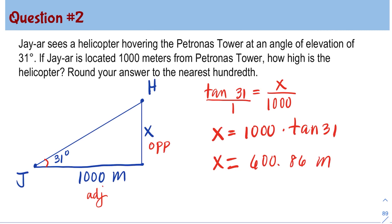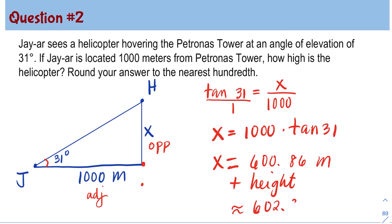To find the height of the helicopter, we also need to include the height of JR. My friend JR is really tall — he is 6 feet tall, so that is about 2 meters in height. So the height of the helicopter is about 602.86 meters, considering the height of JR which is about 2 meters.